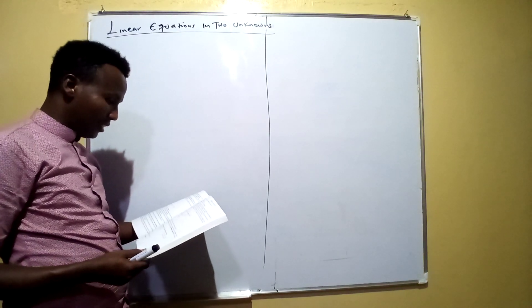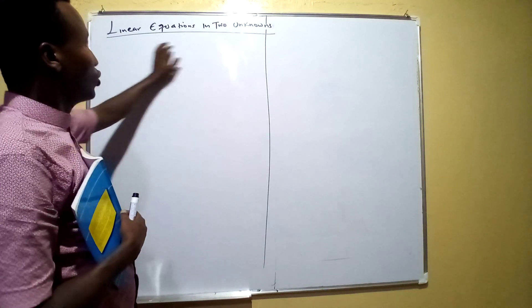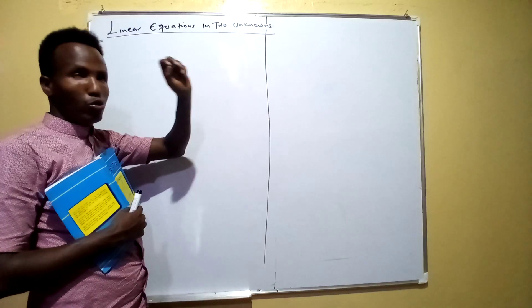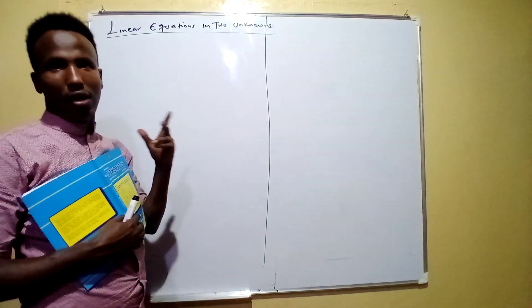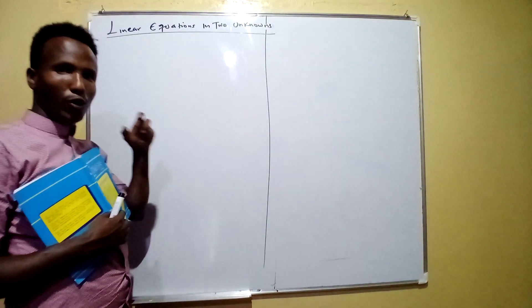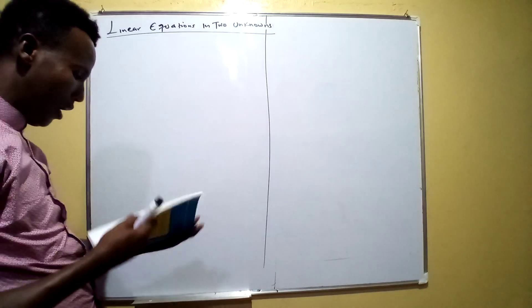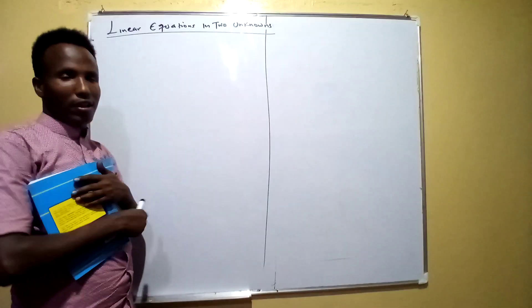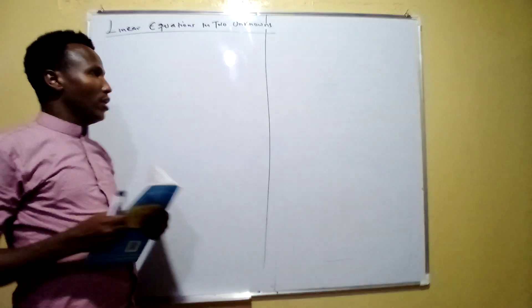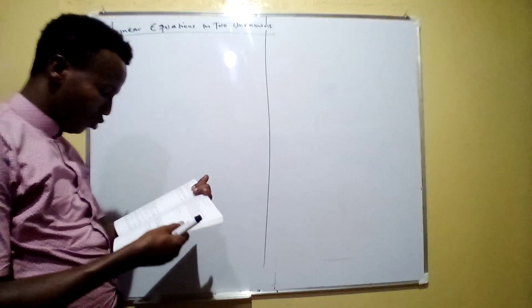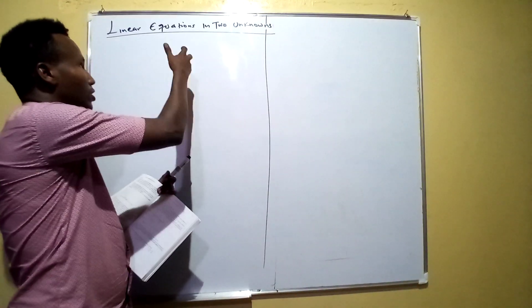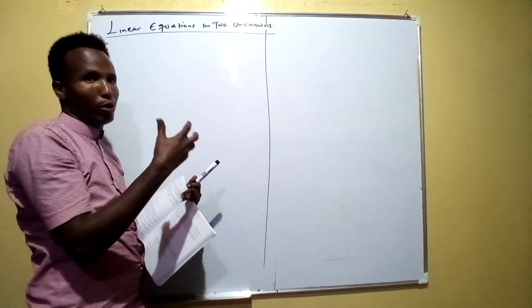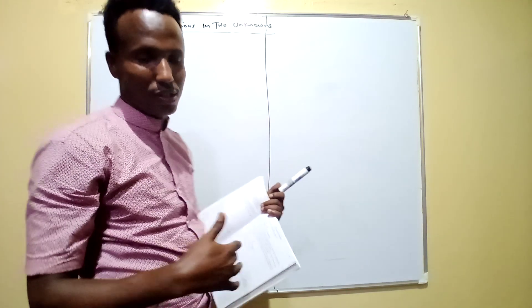Now we will start. When you have linear equations in two unknowns, you will have two unknowns — that may be X and Y, or B and Q. You will have two unknowns, and you are expected to get the value of those unknowns. This will result in a number of simultaneous equations.